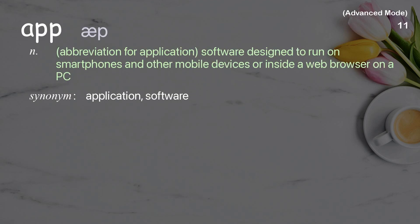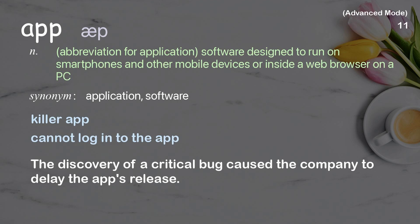App: Abbreviation for application; software designed to run on smartphones and other mobile devices or inside a web browser on a PC. Examples: Killer app. Cannot log into the app. The discovery of a critical bug caused the company to delay the app's release.